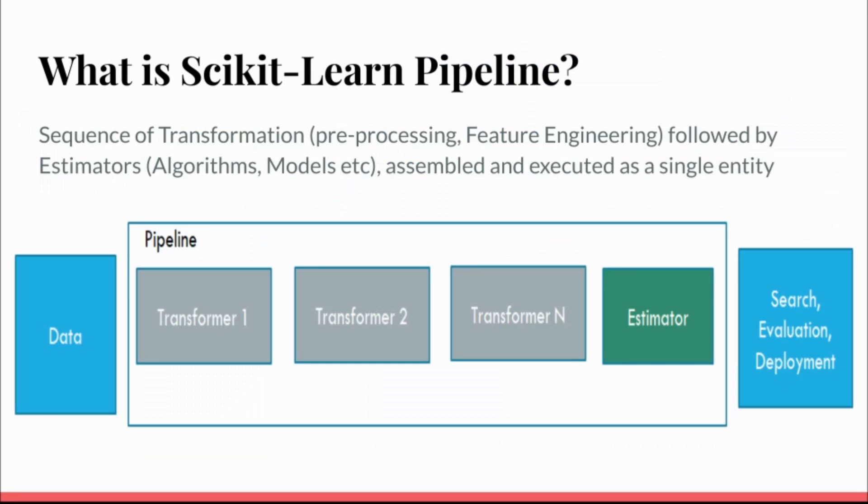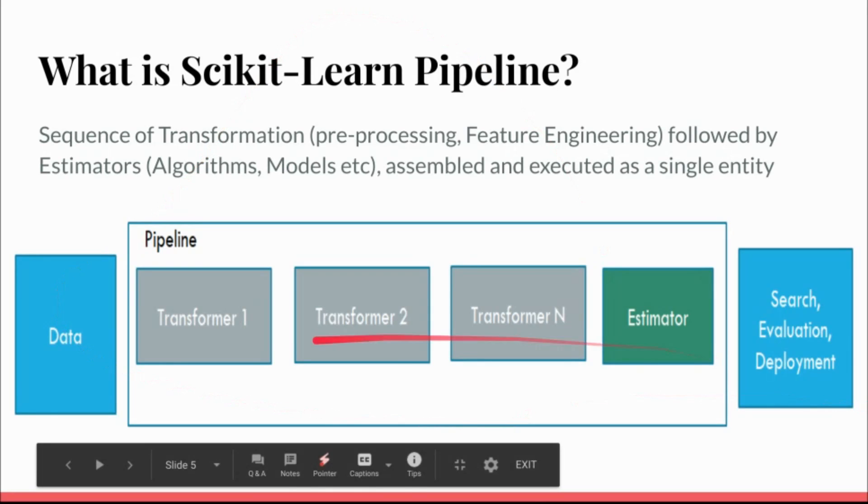What is scikit-learn pipeline? Scikit-learn pipeline is a sequence of transformations - the transformations can be your pre-processing or feature engineering activity that you do - followed by an estimator. The estimator can be your algorithm, models, or anything. You assemble everything together and execute as a single entity. I will give some examples and have a detailed session in my follow-up video, but this is how the pipeline looks like. You have your data, you have pipeline.